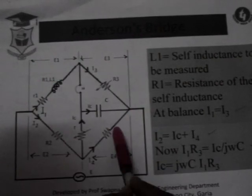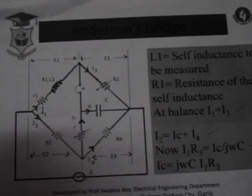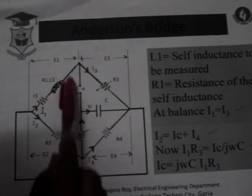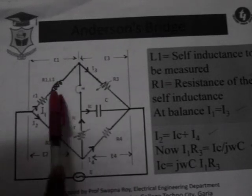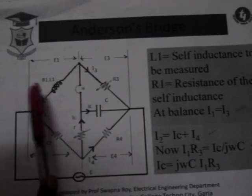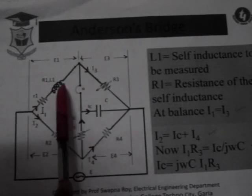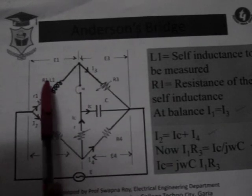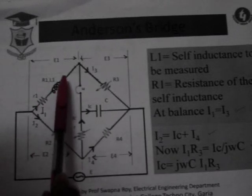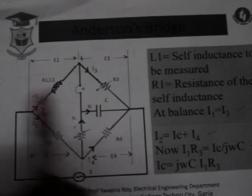This is the figure of the Anderson Bridge. Here we can see one coil. Our objective is to find the inductance of this coil. Capital R1 is the internal resistance of the coil.